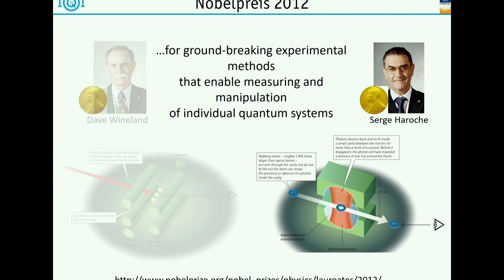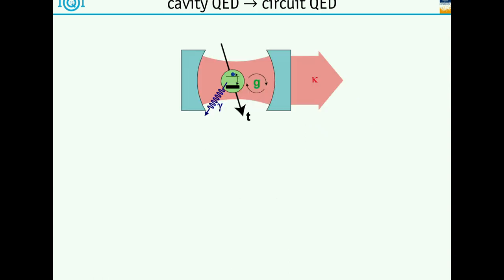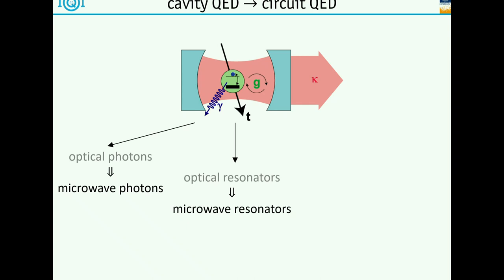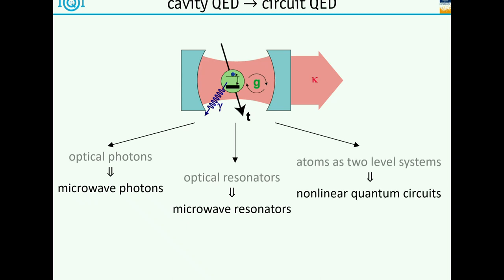You can use these atoms to manipulate and probe the microwave field inside. We take these ideas and transform them over to our superconducting quantum circuits. So: resonator, atom inside, the atom passes through or is trapped inside, interacts with the cavity, the two-level system can decay, the cavity can decay. What we do is replace optical photons with microwave photons, which means replacing optical resonators with microwave resonators. And instead of atoms as two-level systems, we use our nonlinear quantum circuits - our qubits.